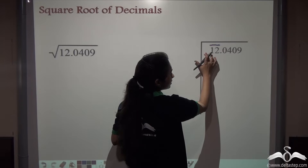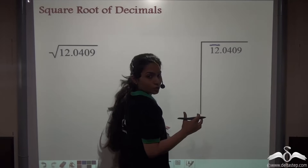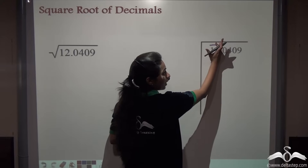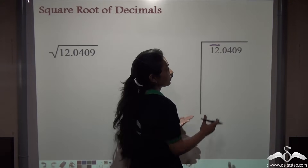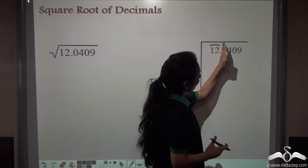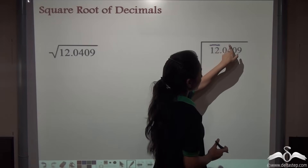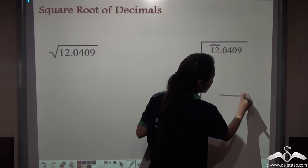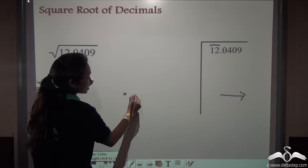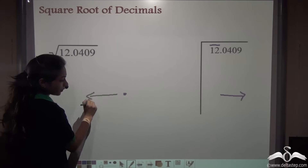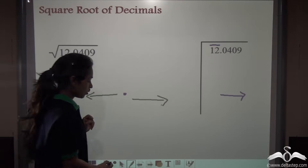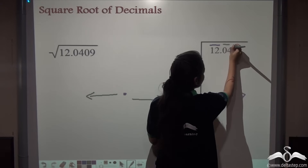Suppose one digit were there — say five here — then you could place a bar over that also. So remember: when there is a decimal point, start placing the bar from the ones digit before the decimal point. Now what about the digits after the decimal point? Start placing the bar from the left-hand side only. So when there is a decimal point, you start placing a bar first going right-to-left before the decimal, and then for the digits on the right side, you start placing the bar from left to right.